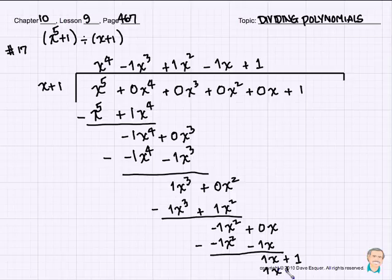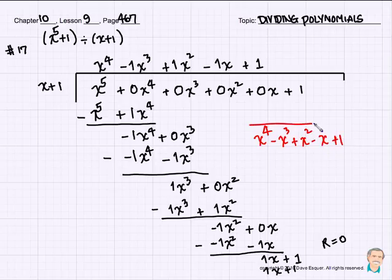Because 1 times x plus 1 gives me the 1x plus 1. And when we subtract, we end up with a remainder equal to 0. So our final answer for this synthetic division problem is x to the 4th minus x cubed plus x squared minus x plus 1.